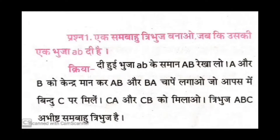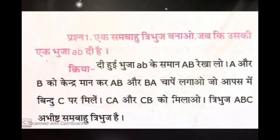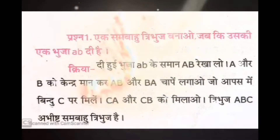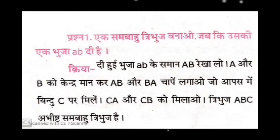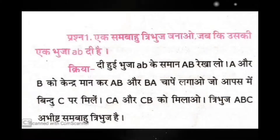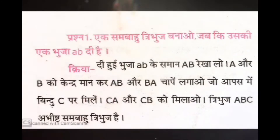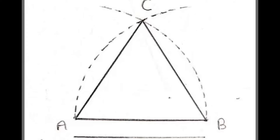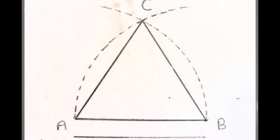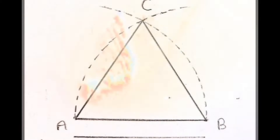Question one: draw an equilateral triangle where one side is AB. The length of the lines is not mentioned, so you can draw according to your choice — it can be four centimeters, five centimeters, or six centimeters, as you like. Draw a small line AB as the given line.